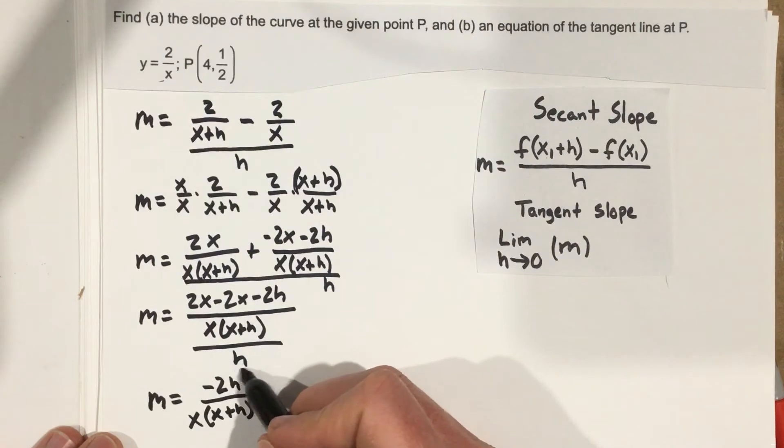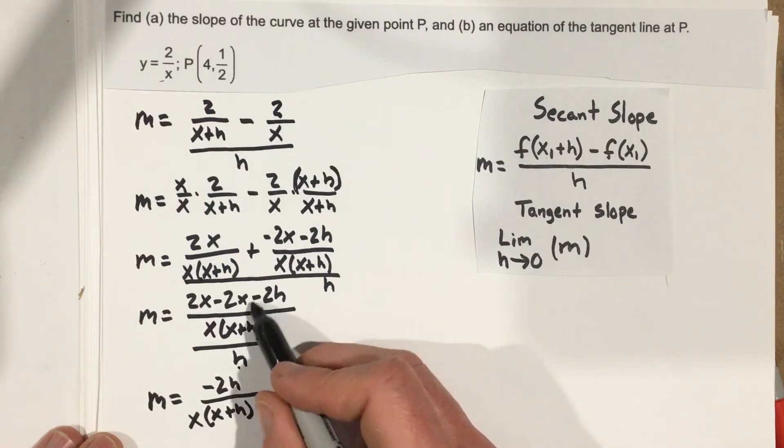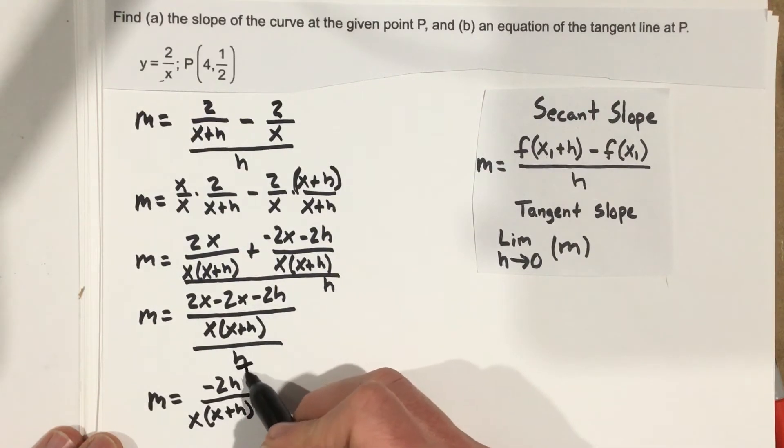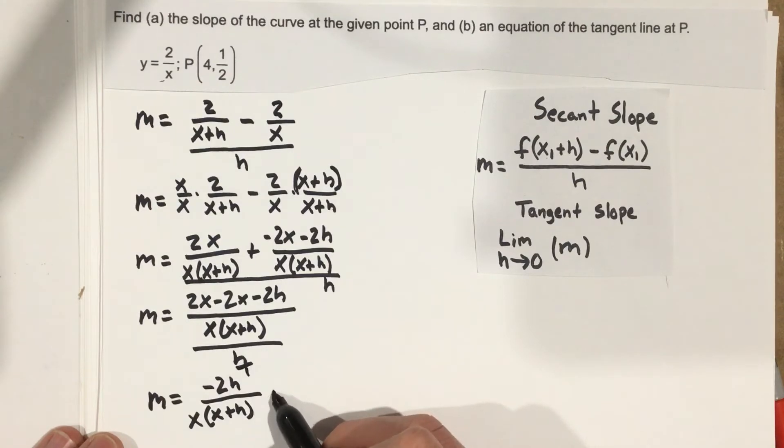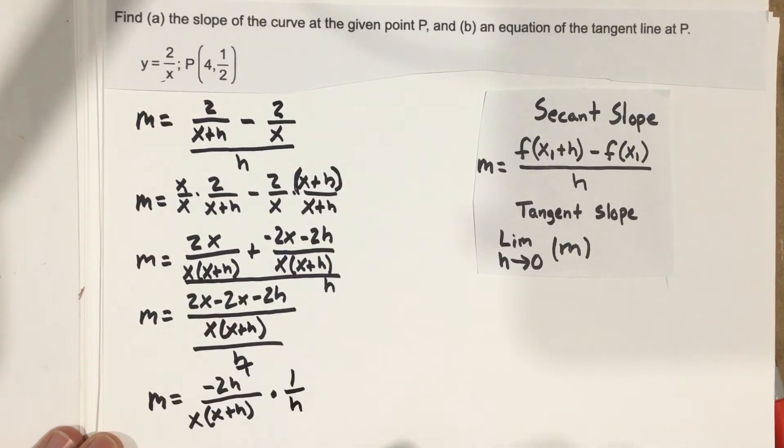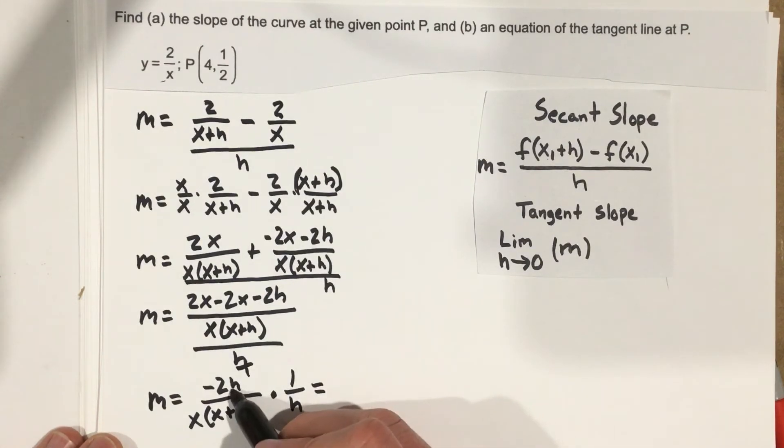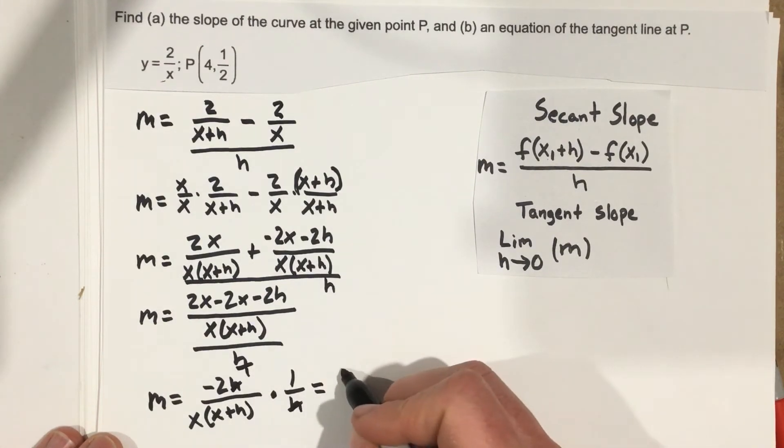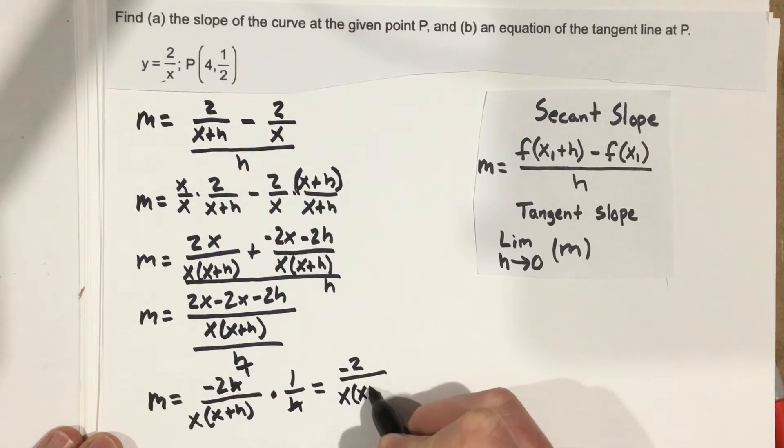And I'm going to just go ahead and flip this and multiply. So this is a fraction over a fraction, h over 1, so I can multiply this by 1 over h here. And when we do that, you'll notice the h's are going to cancel. And you're left with negative 2 over x times x plus h.